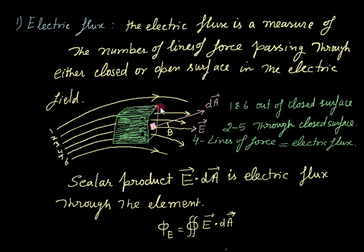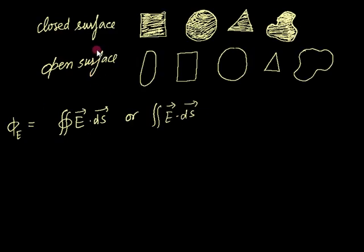If we have to find out the total electric flux, we integrate it. Because this is a closed surface, we use the closed surface integral of E dot dA, so one can find out the total electric flux passing through this closed surface.